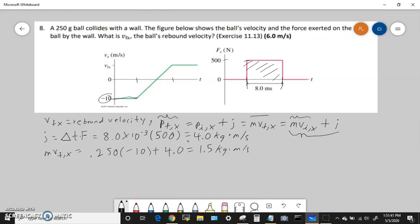So this is m·VFX. We want to find out VFX, so we just divide by the mass. So we know that mass is 0.250 kilograms, so VFX then is going to be 1.5 over 0.250. So that turns out to be 6 meters per second. So that's the final velocity, the rebound velocity.